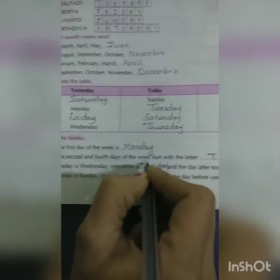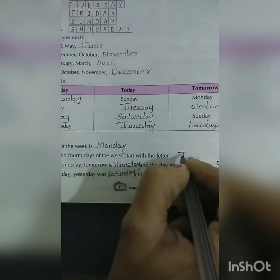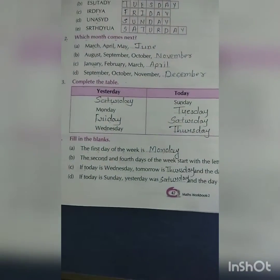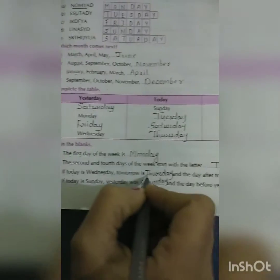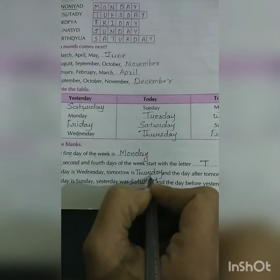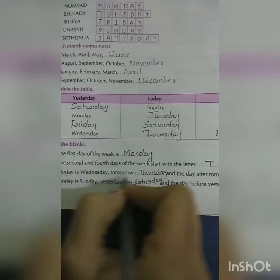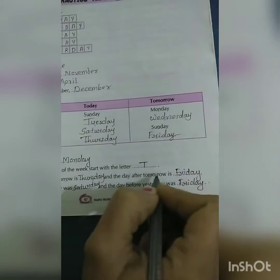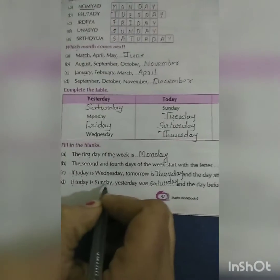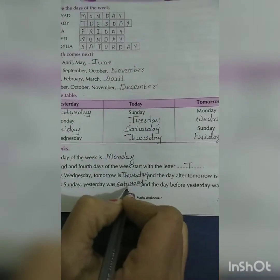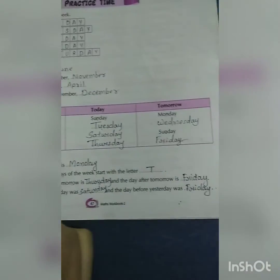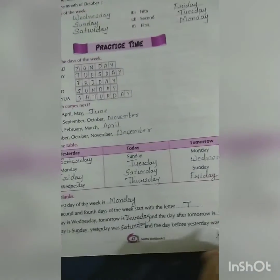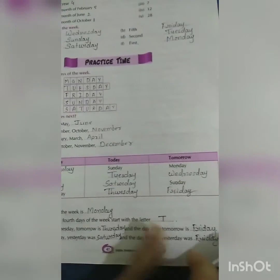Fill in the blanks: The first day of a week is Monday. The second and fourth days in a week start with the capital letter T — Tuesday and Thursday. If today is Wednesday, tomorrow is Thursday and the day after tomorrow is Friday. If today is Sunday, yesterday was Saturday and the day before yesterday was Friday.